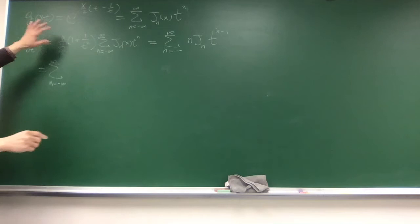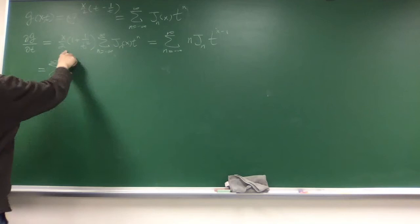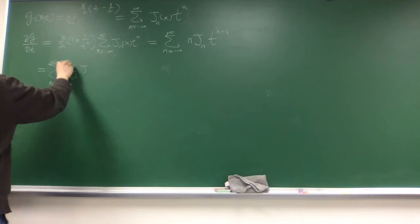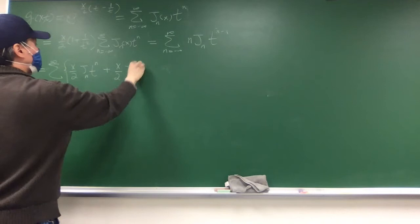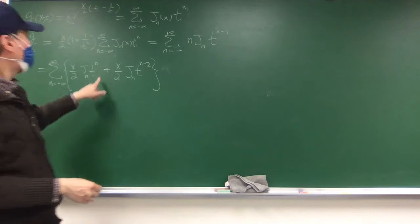The left-hand side has two terms. For this summation it's good that it goes from negative infinity to infinity, so you don't need to worry about the boundary. The first term is x over 2 times J sub n times t to the power n, and the second term is minus x over 2 times J sub n times t to the n minus 2.